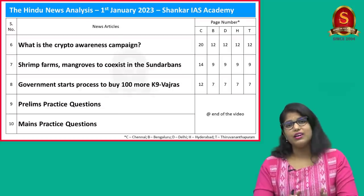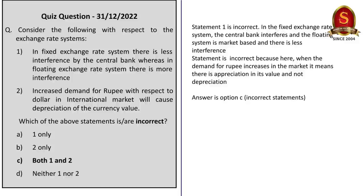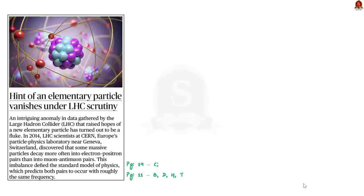Let's get into the first news article discussion. This article talks about the Large Hadron Collider, that is LHC. LHC is in news because some data from it gave hope of a new elementary particle, but this assumption has turned out to be wrong. Let us understand what the Large Hadron Collider is and how an elementary particle is related to it.